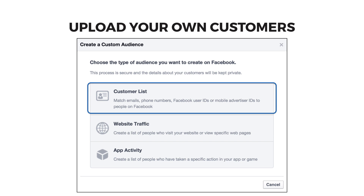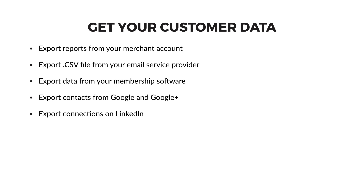To ensure you have a high quality list, I recommend you never purchase a leads list and use it for this purpose. Make sure whatever list you use at least includes email addresses, but you can also add people by their phone numbers or other information that matches on Facebook. To get your customer data, you'll need to download a file from online and offline databases you have access to. For example, your merchant account should be able to give you a report of buyers over a period of time, and your email service provider will have a subscriber export in the form of a CSV file.